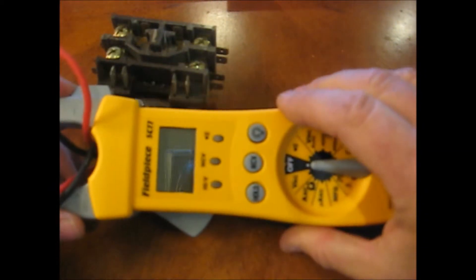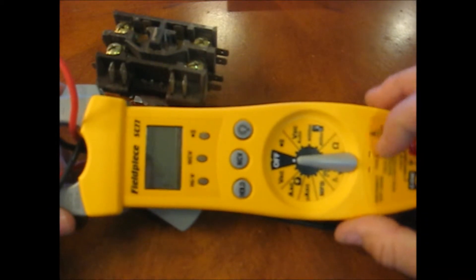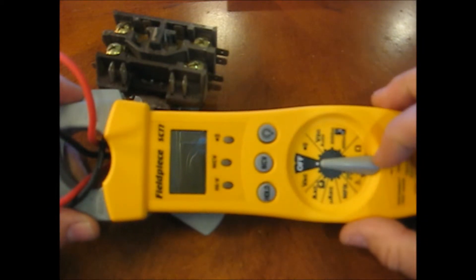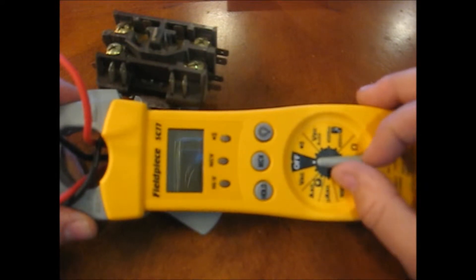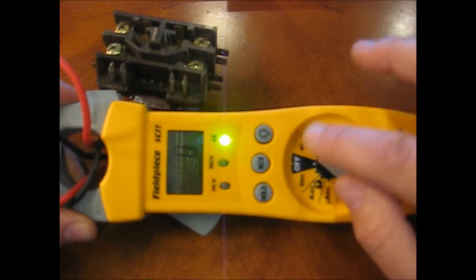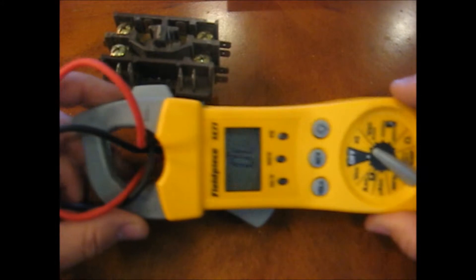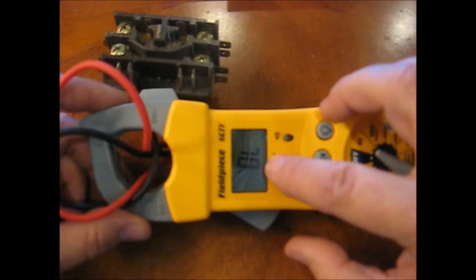I'm going to set that aside for a minute and pull out the multimeter. So in this case we've got the Fieldpiece SC77. We're going to switch this over to continuity. As you can see here we've got open line. We'll take our leads off of that.